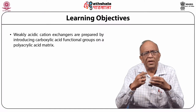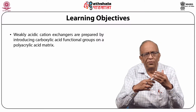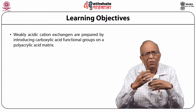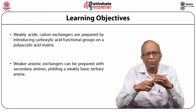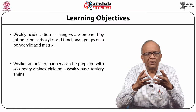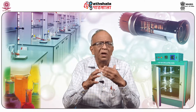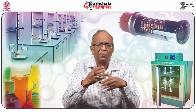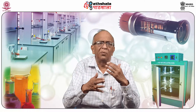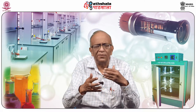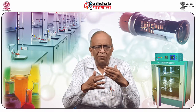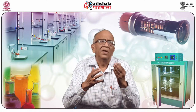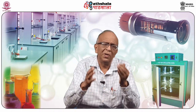Weakly acidic cation exchangers are prepared by introducing carboxylic acid functional group on a polyacrylic acid matrix. On the other hand, weaker anion exchangers can be prepared with secondary amines yielding a weakly basic tertiary amine. This ion exchange mechanism was earlier noticed in clays. Observing that natural behavior, synthetic ion exchangers were prepared — cation exchangers and anionic exchangers. One specificity of these exchangers is that a cation exchanger will exchange cations and an anion exchanger will exchange anions — it is the exchange of similar type of ions.